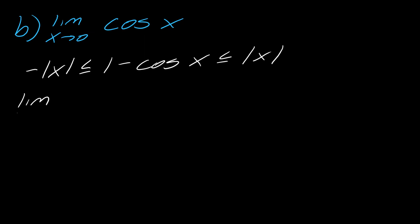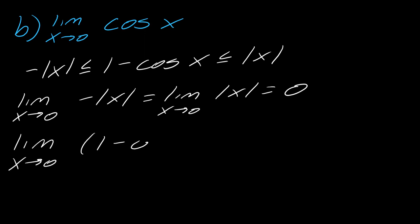So once again, I know that the limit as x approaches 0 of the negative absolute value of x is the same thing as x approaches 0 of the absolute value of x. So all of that equals 0. So what that tells me then is that the limit as x approaches 0 of 1 minus cosine of x, so by the squeeze theorem, this must equal 0.